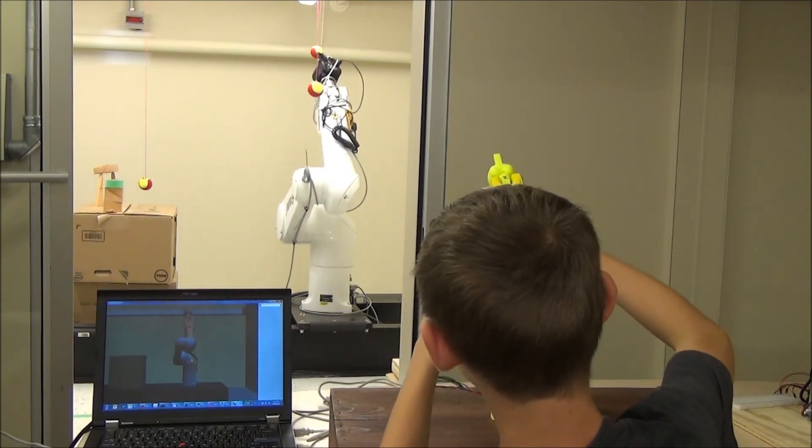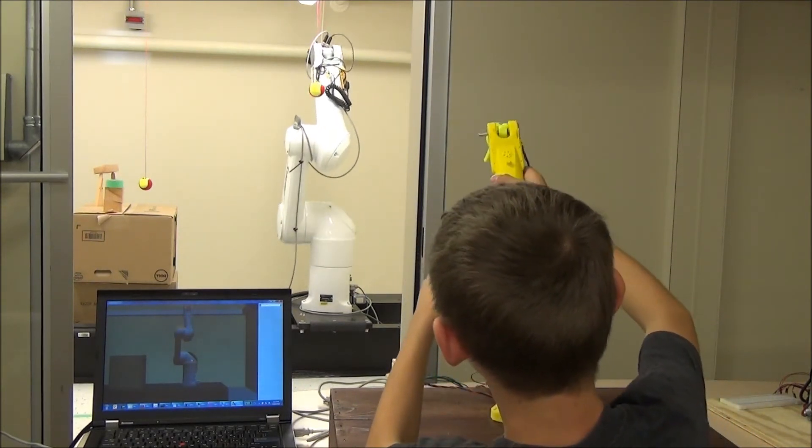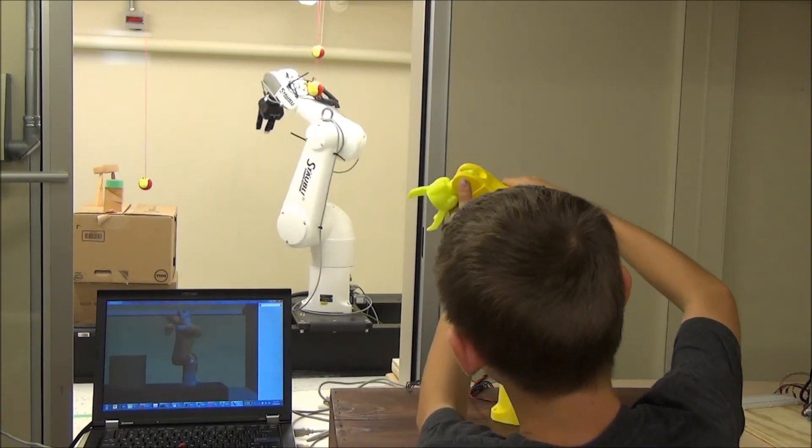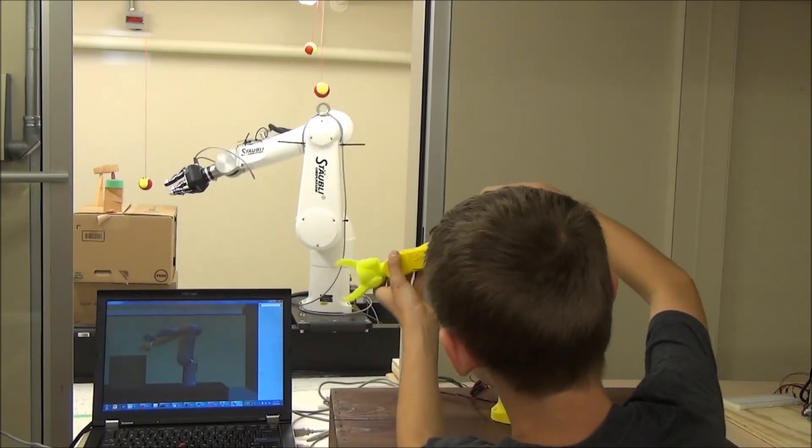The encoder values sent to the robot are filtered to remove jitteriness, enforce velocity and acceleration limits, and prevent the robot from attempting to move beyond its joint limits.